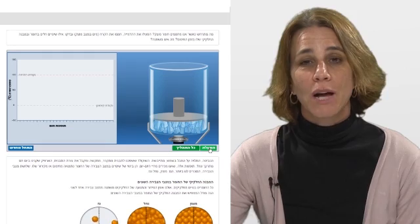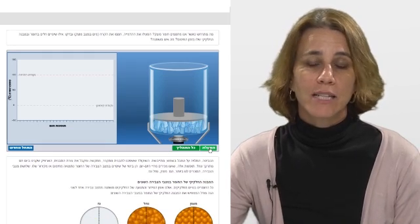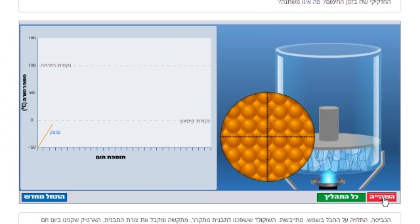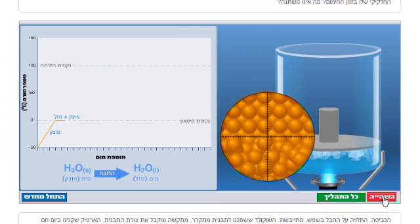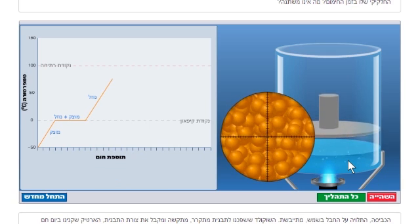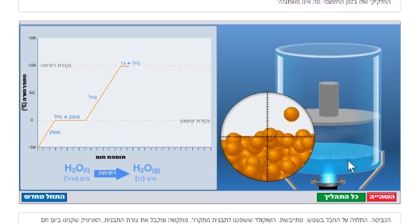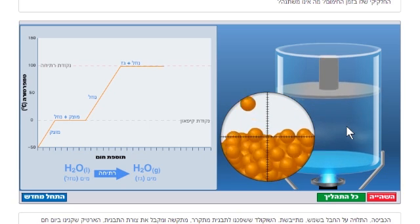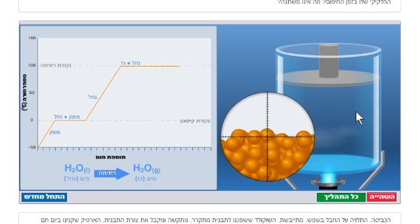This simulation describes what happens when we heat ice, which is solid water. When we activate the simulation, we can follow how water changes on two scales. On the macro scale, we can see how does ice, which is solid, change to liquid water and then to water vapor, which is a gas. What takes up a larger volume?